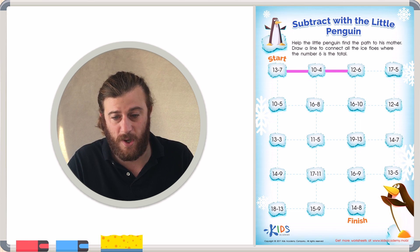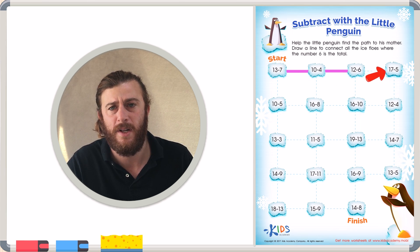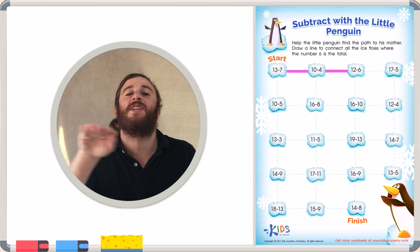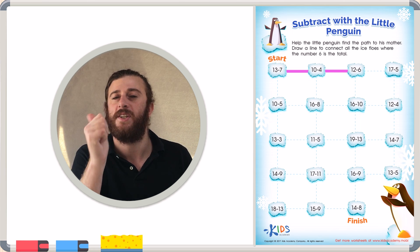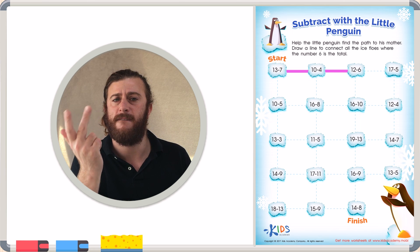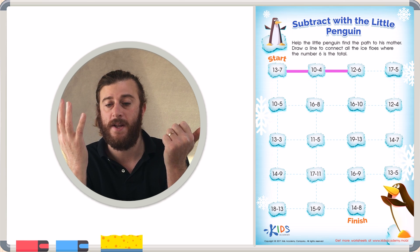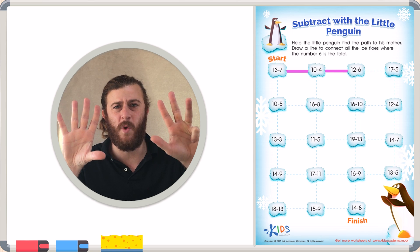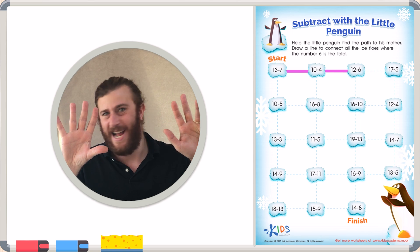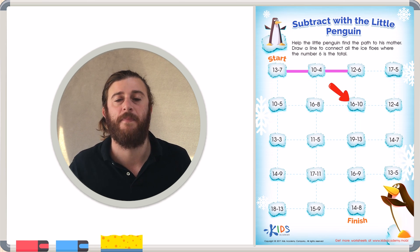Again, I have two choices. I can draw a line to 16 minus 10 or 17 minus 5. Let's try 17 minus 5 since we're working horizontally. 17, 16, 15, 14, 13, 12, 11, 10, 9. And already I see that I have way more than 6 fingers up. I don't think that 17 minus 5 is the right answer. Let's try 16 minus 10.